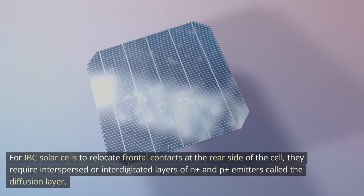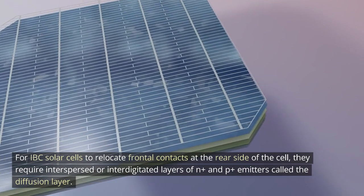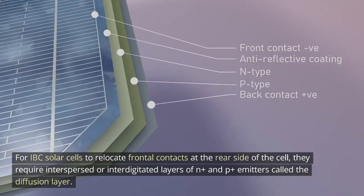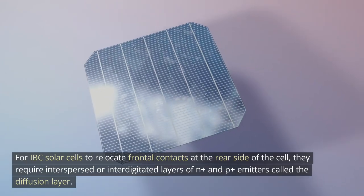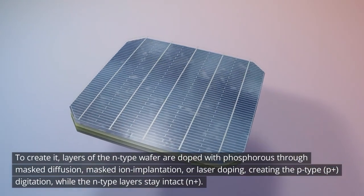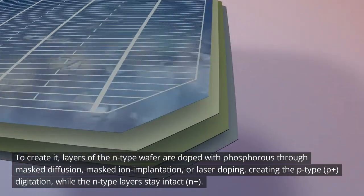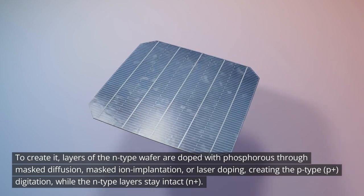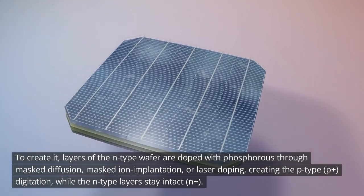For IBC solar cells to relocate frontal contacts at the rear side of the cell, they require interspersed or interdigitated layers of n+ and p+ emitters called the diffusion layer. To create it, layers of the n-type wafer are doped with phosphorus through mass diffusion, masked ion implantation, or laser doping, creating the p-type, p+, digitation, while the n-type layers stay intact, n+.